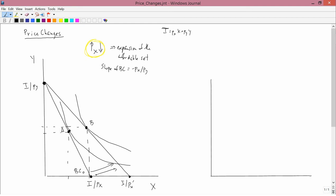Let's put some arbitrary numbers here. Suppose that the old price of X was $2 a unit. The new price of X is $1 a unit. And let's suppose that A's X coordinate was $10. And B's X coordinate is perhaps $15.